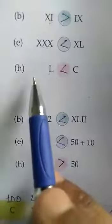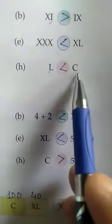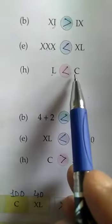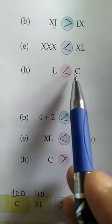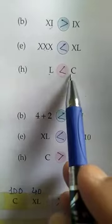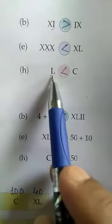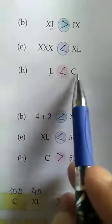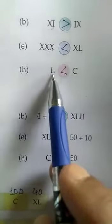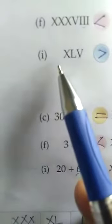Now QH: L and C. We will compare these numbers. You can see that C is greater than L because C has 100 and L has 50.